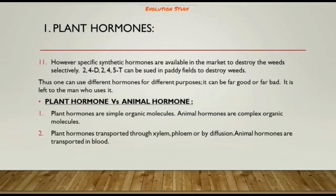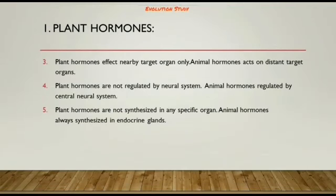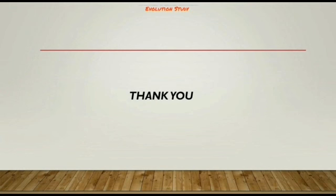Plant hormones are simple organic molecules, while animal hormones are complex organic molecules. Plant hormones are transported through the xylem, phloem, or by diffusion, while animal hormones are transported in blood. Plant hormones affect only nearby target organs, while animal hormones act on distant target organs. Plant hormones are not regulated by the neural system, nor synthesized in any specific organ, whereas animal hormones are regulated by the central neural system and synthesized in the endocrine glands.